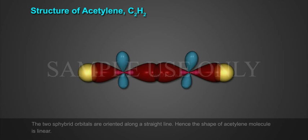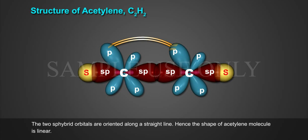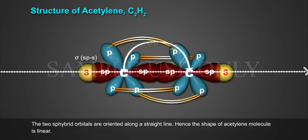The two sp-hybrid orbitals are oriented along a straight line. Hence, the shape of acetylene molecule is linear.